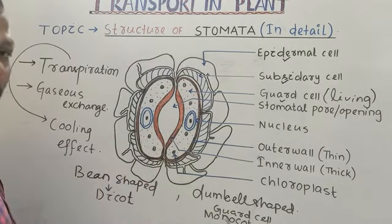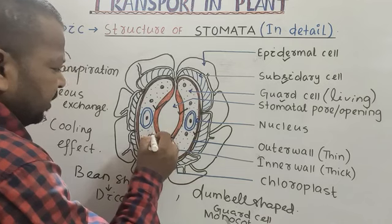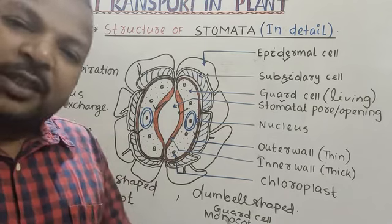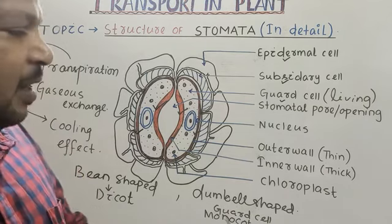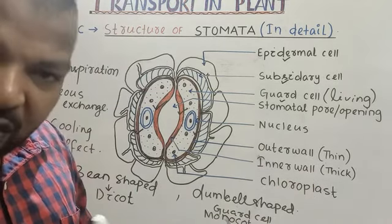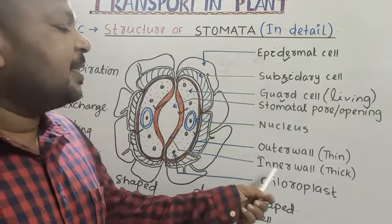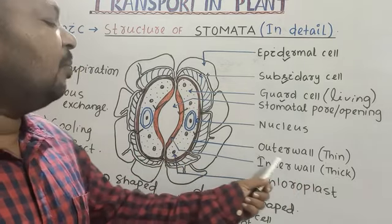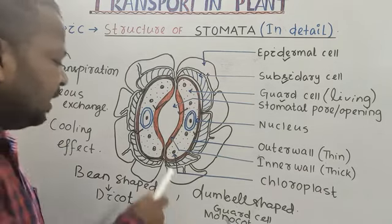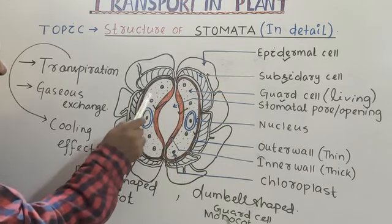Guard cell has two walls: the inner wall and the outer wall. Normally, the guard cell inner wall is thick and the outer wall is thin. The guard cell also has some chloroplast molecules.